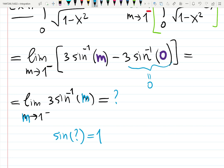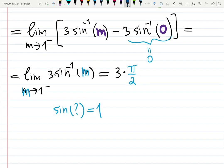Sine of what angle approaches 1 from the left? Pi over 2. So if we are correct, the answer will be 3, because there was 3 in front of it, times pi over 2, which is 3 pi over 2.